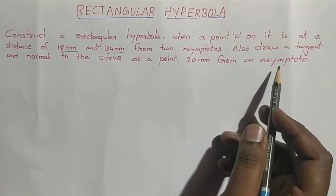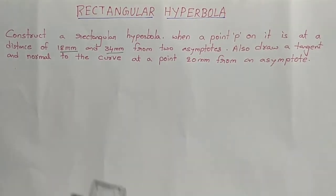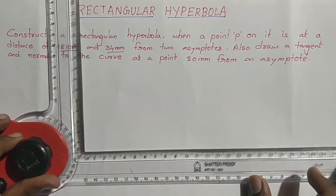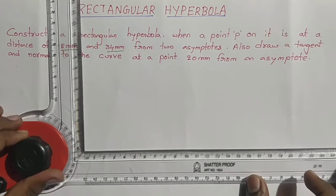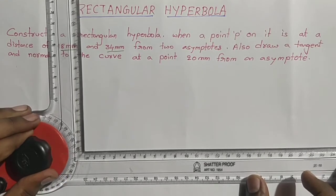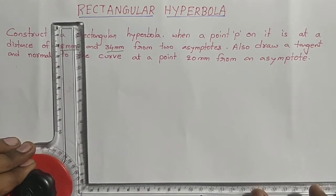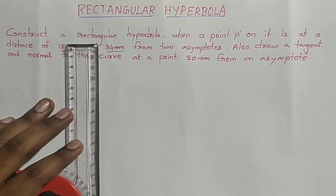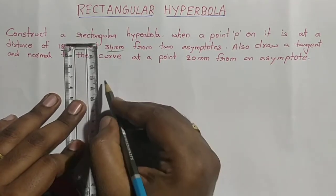Next, draw the vertical line. Draw the two asymptotes - two asymptotes that are 90 degrees to each other.